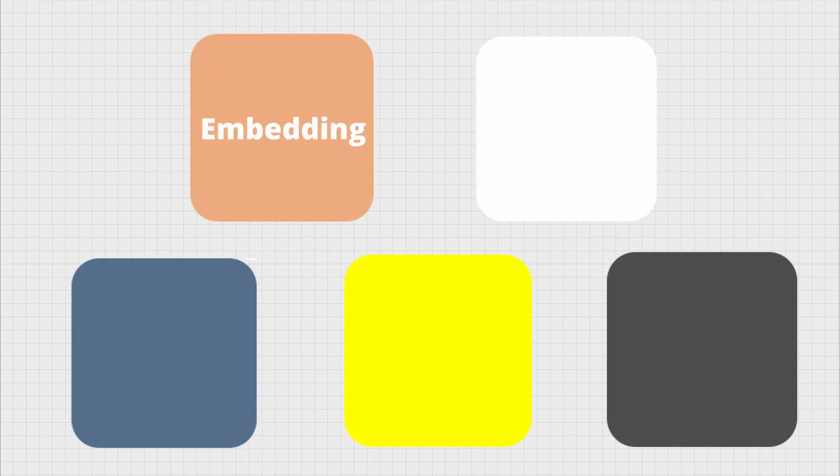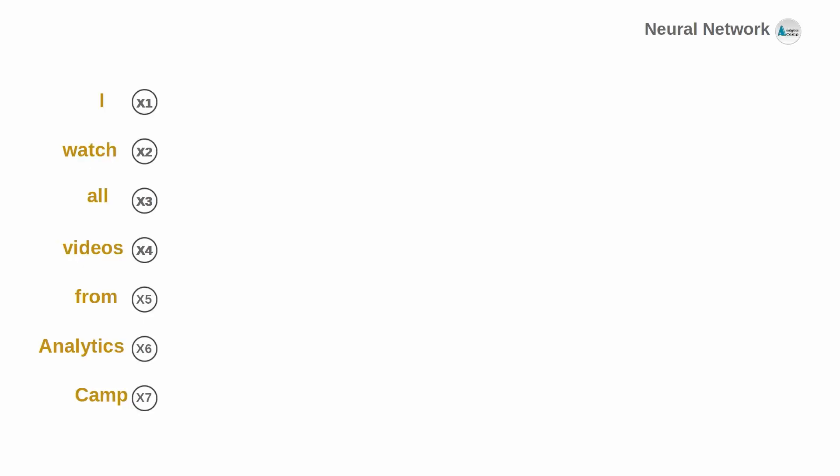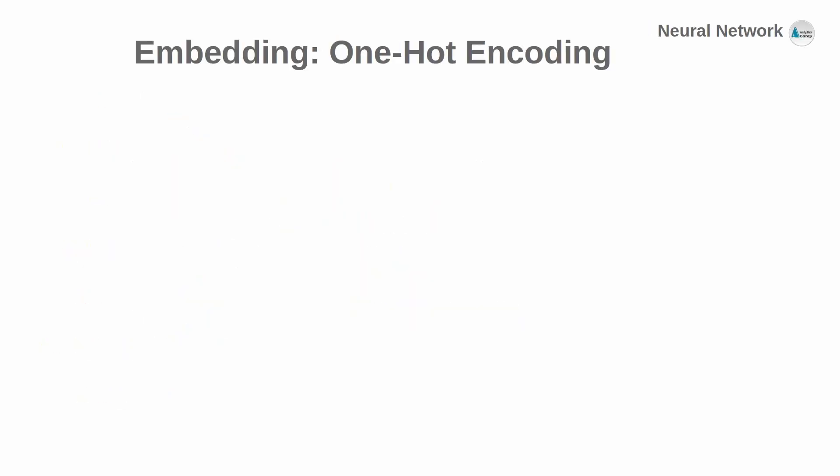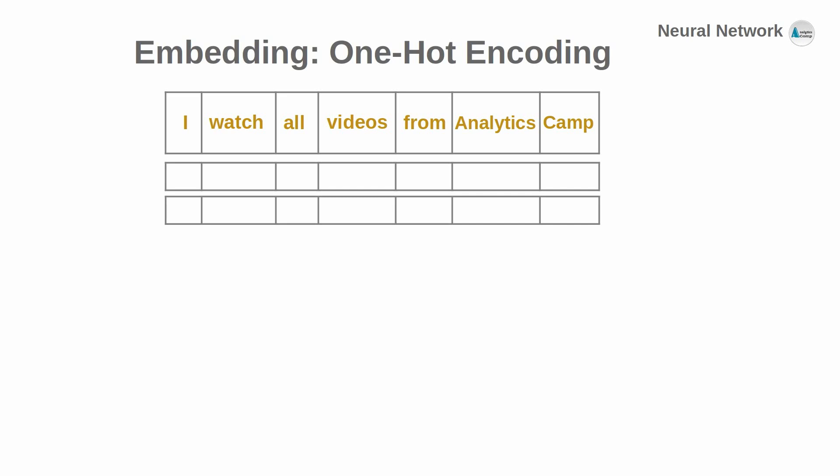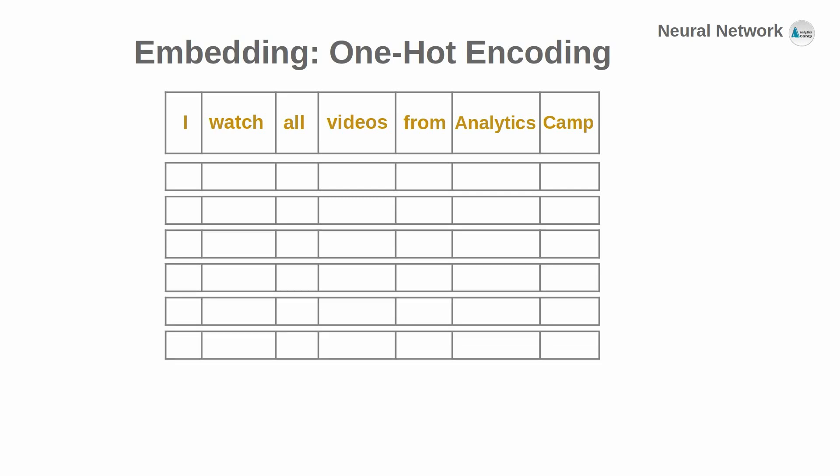In machine learning lingo, this is called embedding. In earlier days of machine learning, we used to use a simple method called one-hot encoding to encode categorical inputs such as words in a sentence in numerical form. All we used to do was construct a vector with the lengths of the total vocabulary we have. For the sake of simplicity, let's imagine that we only have these seven words in our vocabulary. So we have to represent each word with a vector of length 7, where that word's position in the sentence gets the value of 1, and the rest of the positions get zeros.